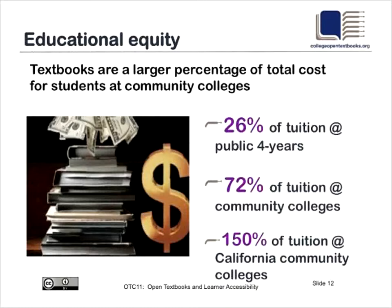For faculty and staff at community colleges, the price of textbooks really hits students hard. Community college is already the affordable college solution, yet a student's textbooks nationwide cost 72% of their tuition. In California, because our community colleges are so affordable, students spend 150% of their tuition — one and a half times their tuition — on textbooks. This is from a 2008 government study.